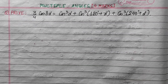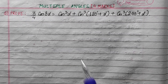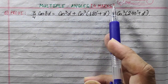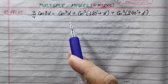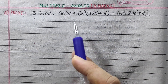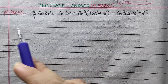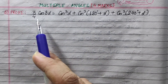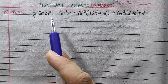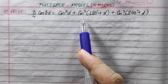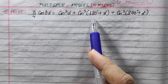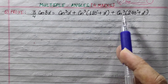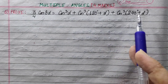Hi everyone. Today we have multiple angles, 4 marks, and a long question proving. Prove that (3/4)cos3α equals cos³α plus cos³(120 plus α) plus cos³(240 plus α).